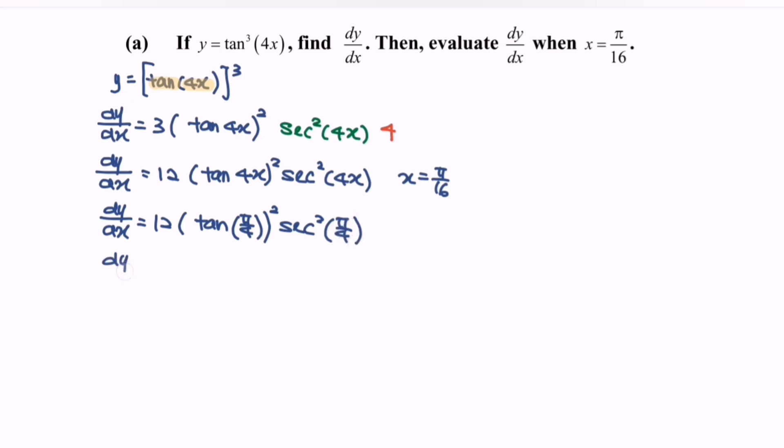So dy dx is equal to 12 with the tangent pi over 4 square over cos pi over 4 bracket square. Rewrite the situation.